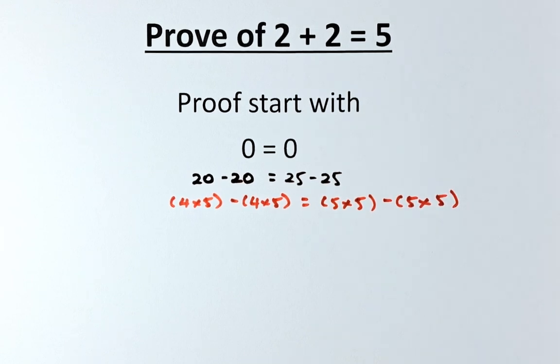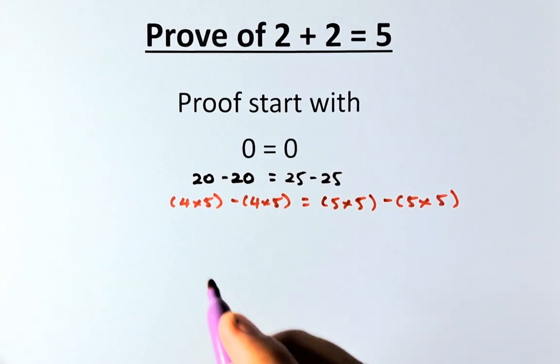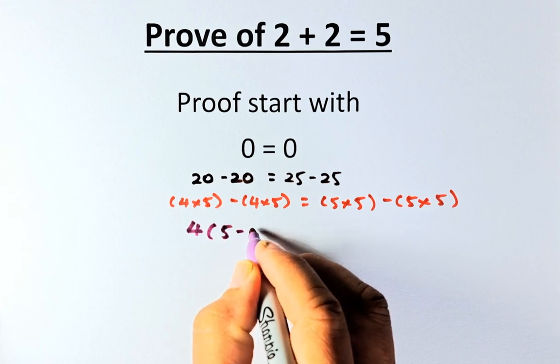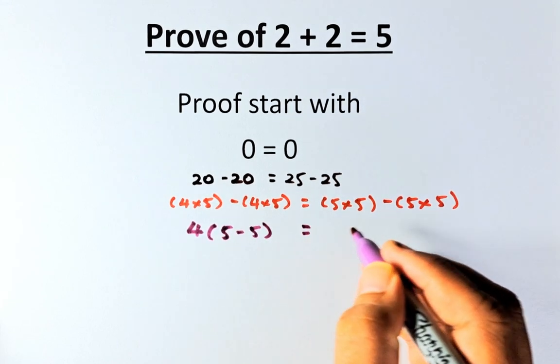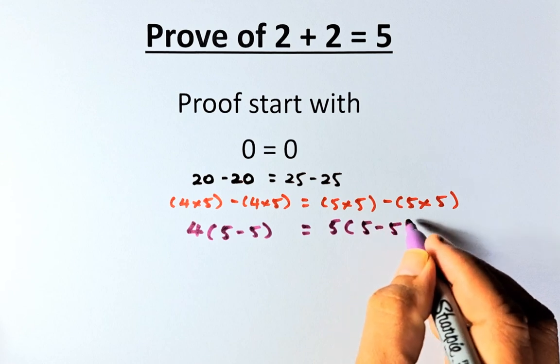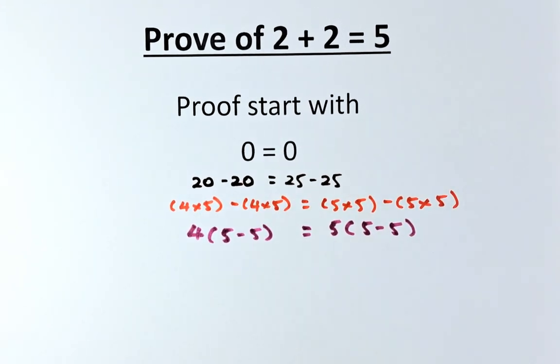Okay, now those of you who are good in algebra, we can do factorizing. So 4 is a common factor. We take out 4 and what's left? We take 5 minus 5. And then here the same thing. We take a common factor of 5 and then 5 minus 5. Okay, that's the next step.